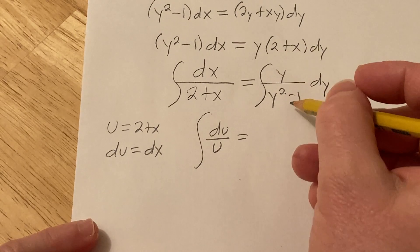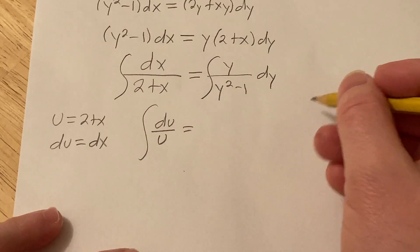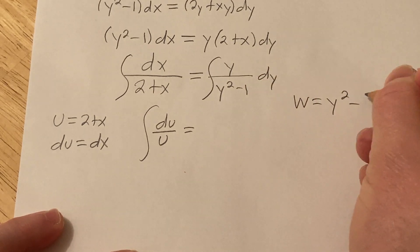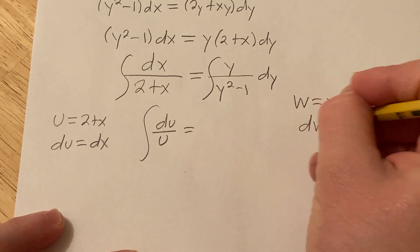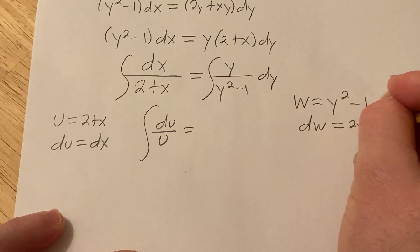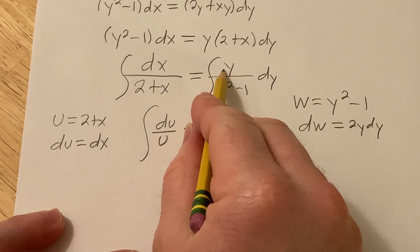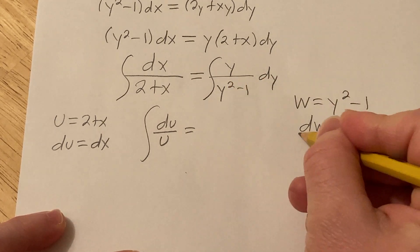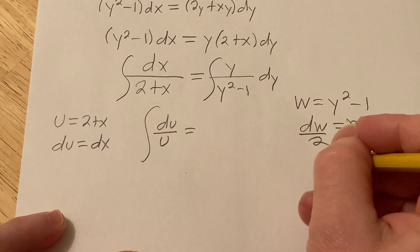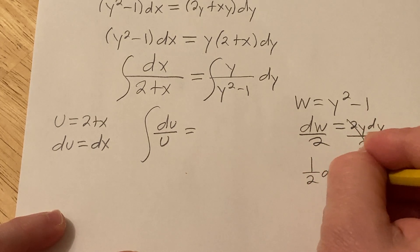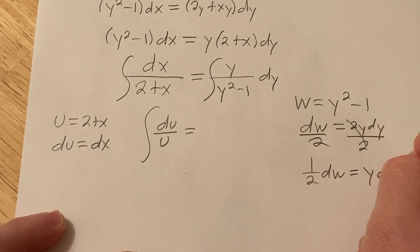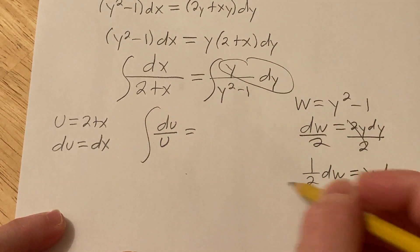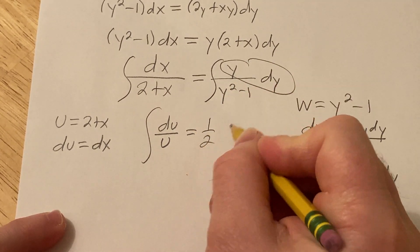Over here you can do the same thing. I'll use a different variable. Let's let w equal the bottom piece here, y squared minus 1. So dw is equal to 2y dy. You'll notice there's no 2 here, so what we do now is we basically make this look like this by dividing away the 2. So we have 1 half dw equals y dy. And now all of this is going to be your 1 half dw. So 1 half dw.